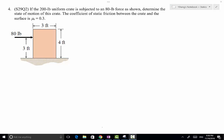In this problem we have a 200 pound uniform crate. When you see uniform it means that the center of gravity is also the geometric center right here, point G, and it is subjected to an 80 pound force. The location is given and we need to determine the state of motion of this crate. The coefficient of static friction between the crate and the surface is 0.3.